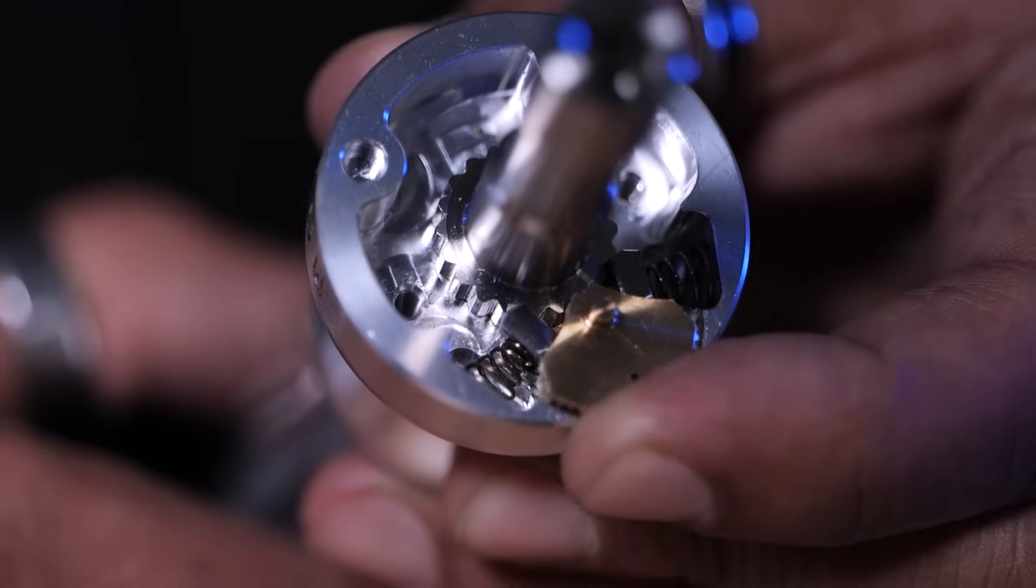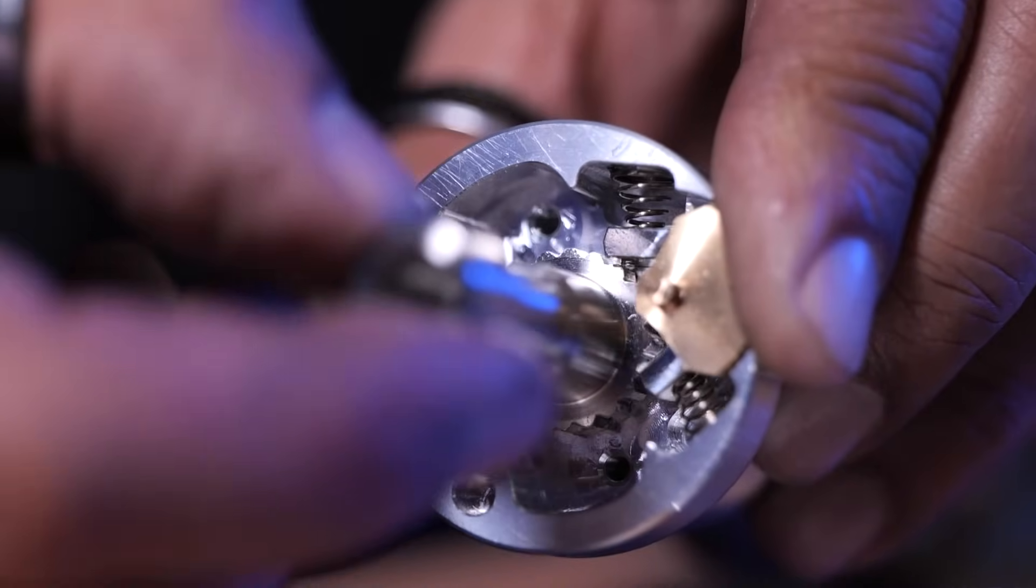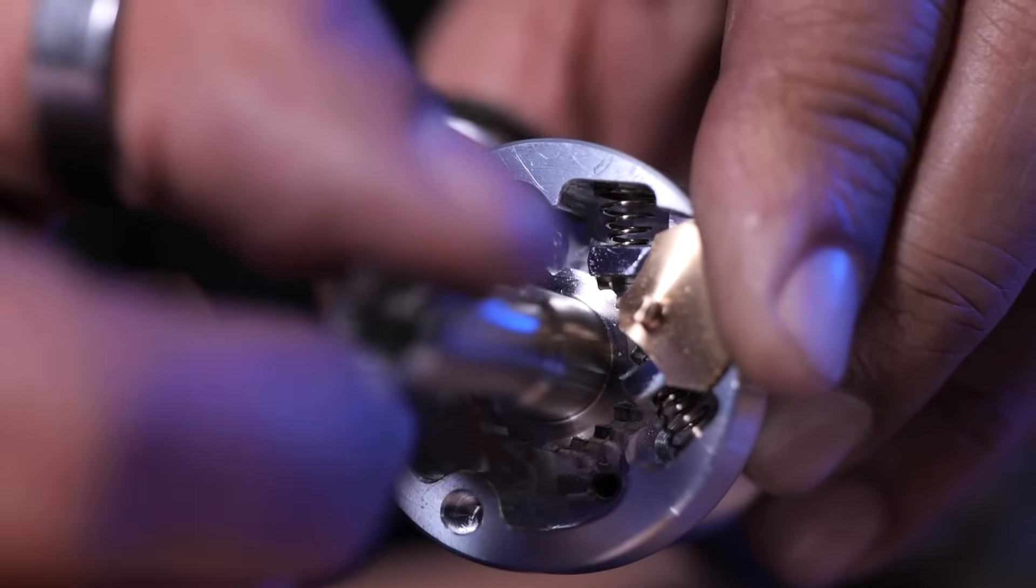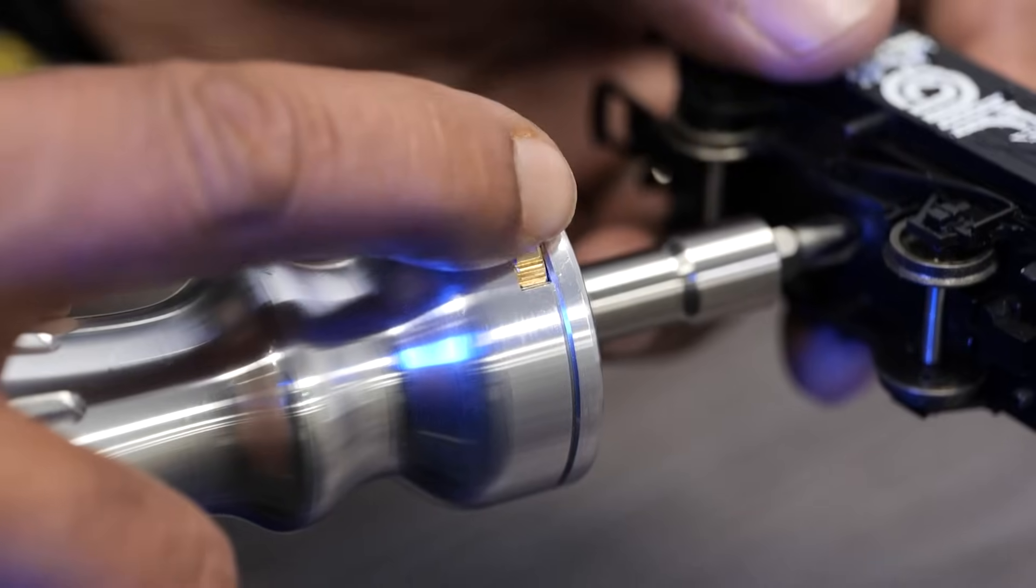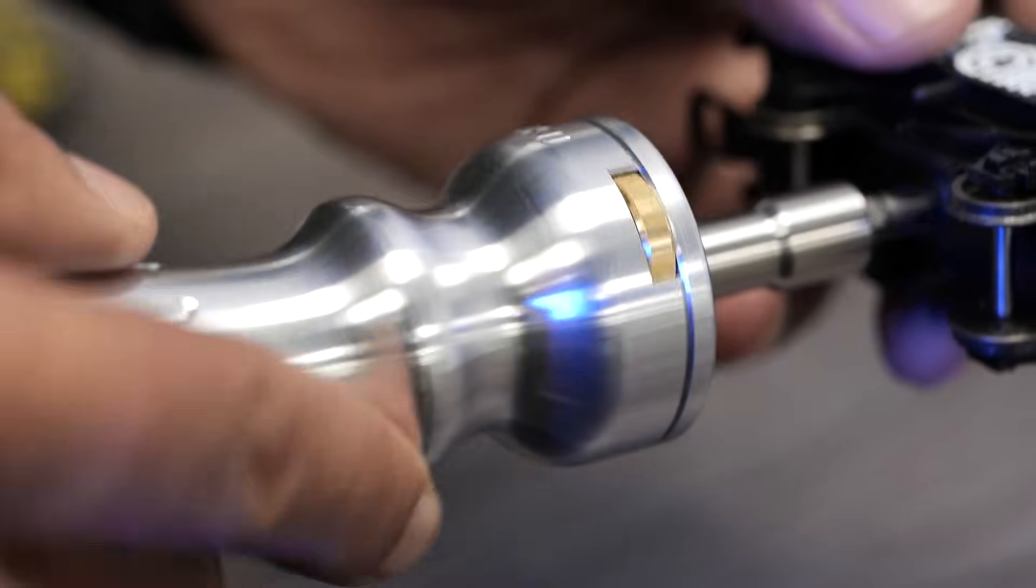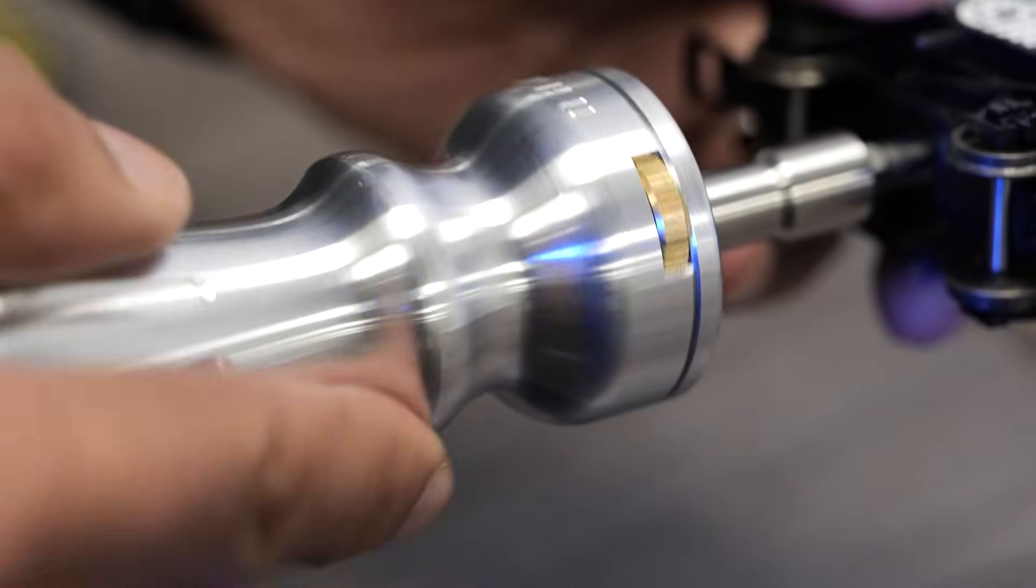The ratchet works where a rocker allows the spindle to rotate in either direction, or it can be placed in its neutral position to lock the spindle in both directions, so you can screw clockwise or counter-clockwise with ease.